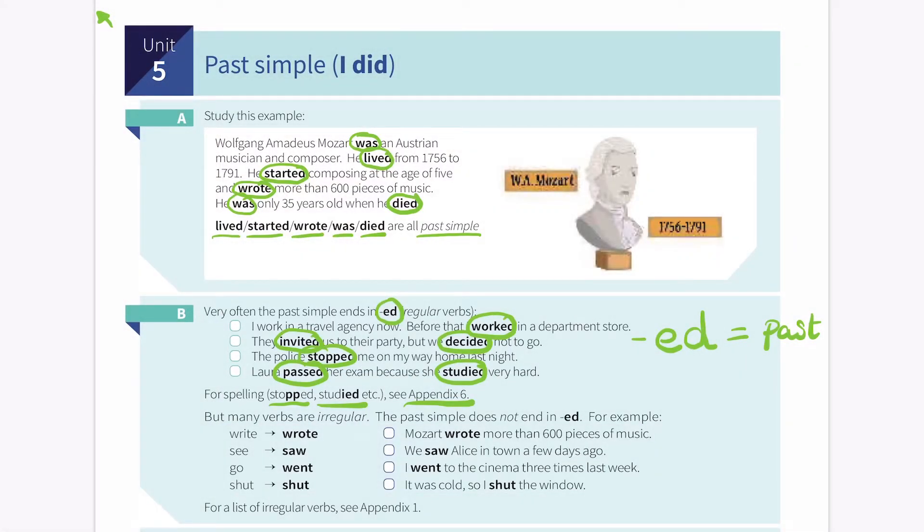But for many verbs, many verbs are irregular. The past simple does not end in ED. So not every word is ED. So for example, write changes into wrote, see changes into saw, go changes into went, and shut stays the same. So Mozart wrote, not righted. We saw Alice, not we seed Alice. I went to the cinema, not I goed to the cinema. It was cold, so I shut the window. It stays the same. So we can find these on Appendix 1. So we should save Appendix 1 and Appendix 6 to access them easier.